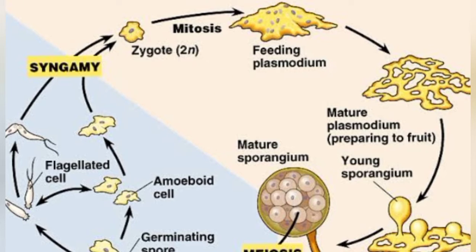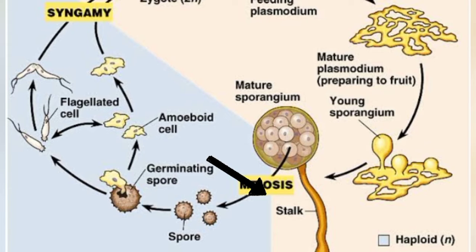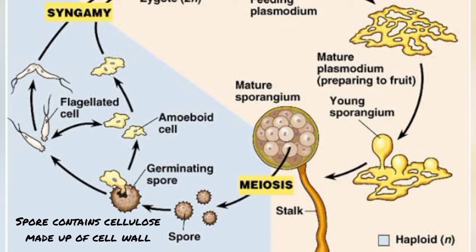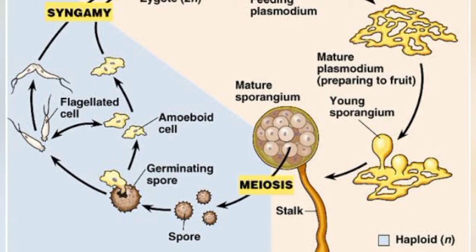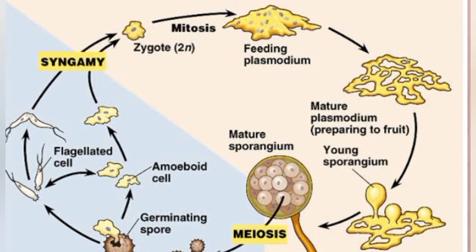The life cycle continues: the zygote undergoes mitotic divisions developing back into a plasmodium, which under unfavorable conditions produces a fruit body with sporangia. The sporangia are haploid and germinate into myxamoeba, forming a stem. This completes the acellular slime mold life cycle.